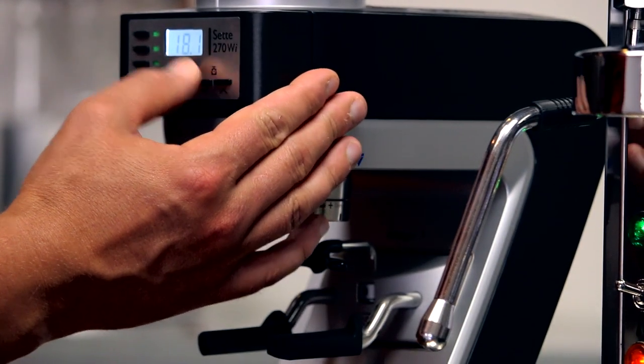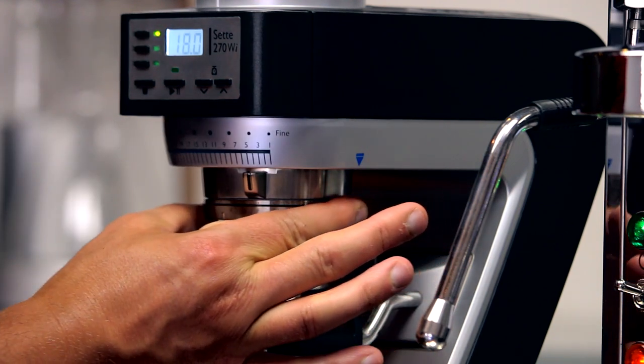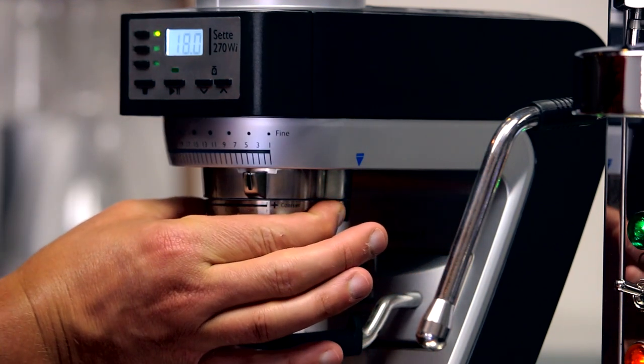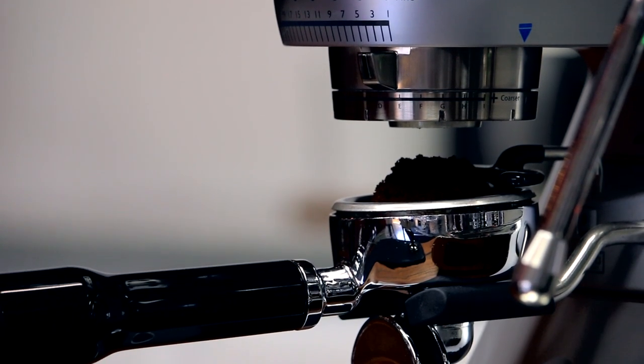Beyond its innovative dosing system, the Settay 270WI retains everything we love about the original Settay 270. Conical burrs make for complex, punchy shots of espresso as well as ensuring almost zero grind retention.